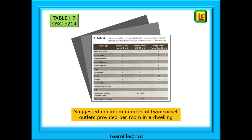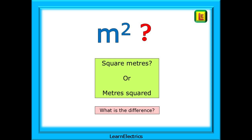For example, some customers will have quite sophisticated home entertainment setups and may need additional sockets close to their equipment. Twin sockets are listed, but there may be occasions when single sockets are more appropriate — for example, in kitchen cupboards for washing machines, fridges, freezers, and so on. That raises another question: we see the symbol m² throughout the electrical books. Do we call it square meters or meters squared, and is there a difference? Well, yes it does matter.